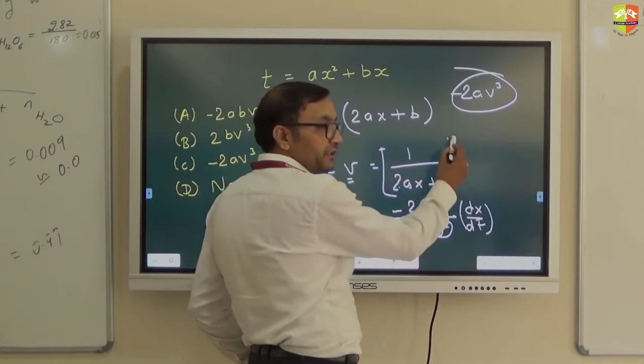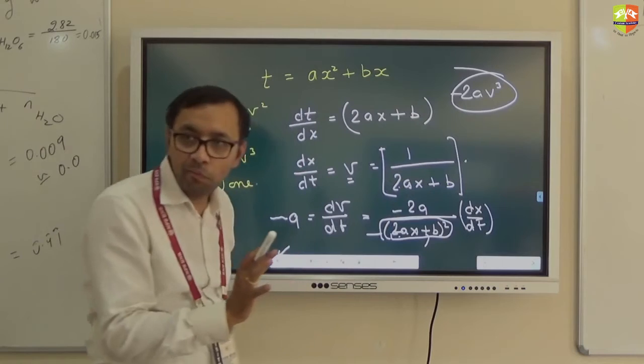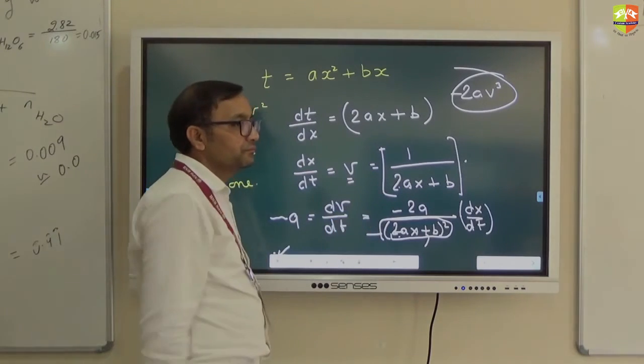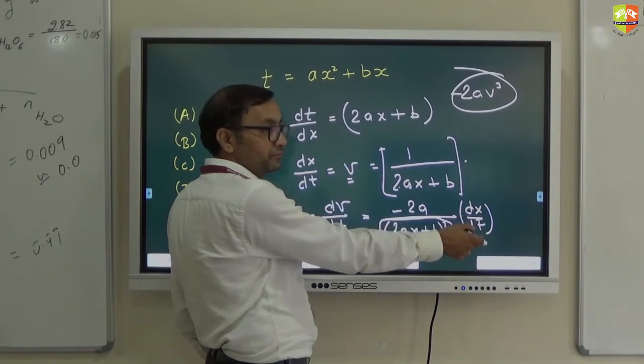Do you know how to differentiate this? You get minus of 2a divided by 2ax plus b whole square. So that is why dx by dt is coming out. Chain rule.